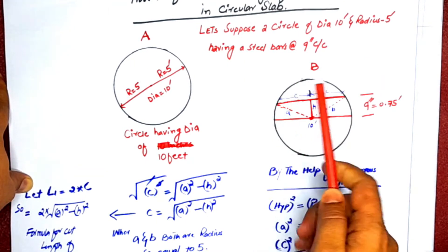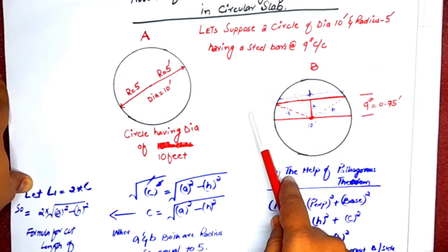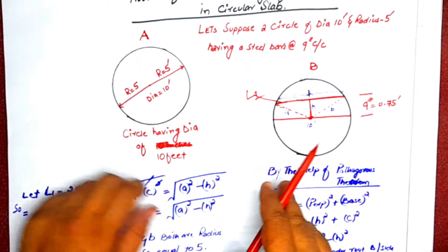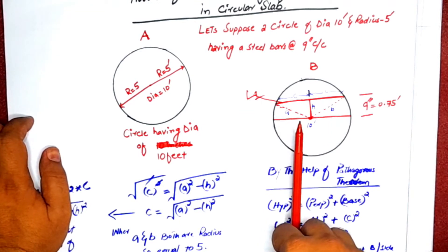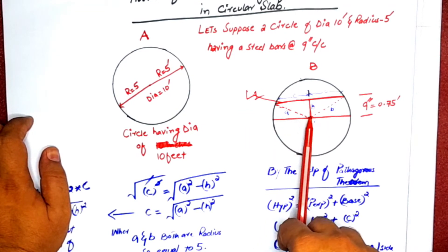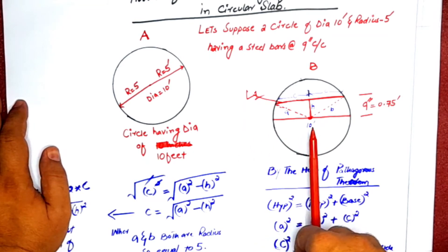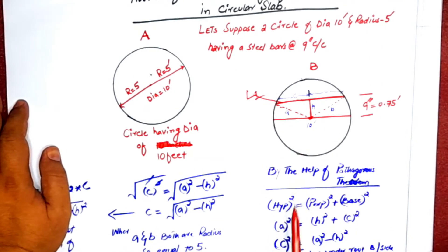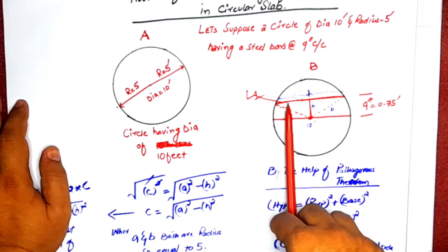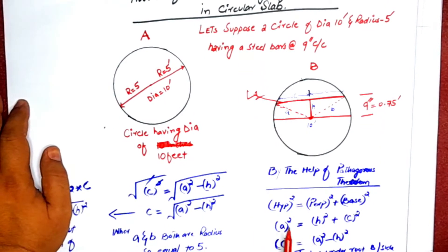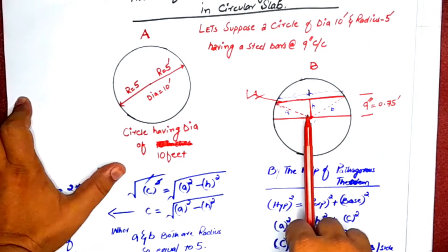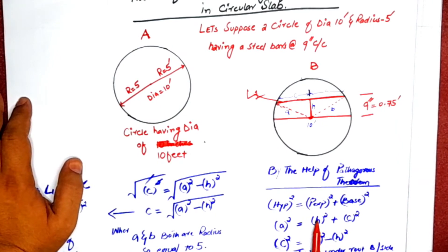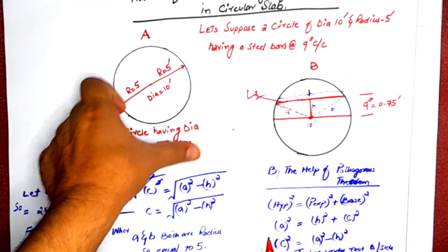The first bar has the notation L1, meaning the length of bar one. In the two triangles formed, we suppose this line is the hypotenuse, denoted by 'a'; its perpendicular is denoted by 'h'; and its base is denoted by 'c'. So a² = h² + c².